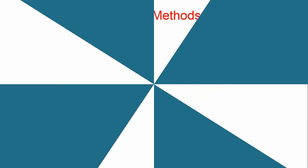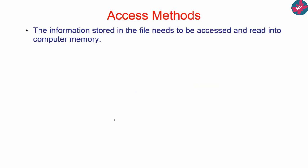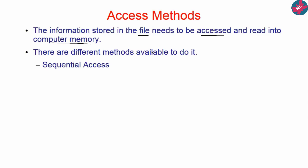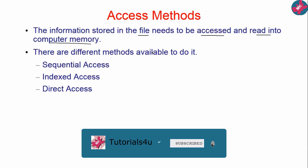The new topic we are going to study is access methods. Access means how we are going to get or retrieve information. We have seen that information is stored in a file, and whatever is stored in the file we need to access and read into computer memory. There are three methods: sequential access, index access, and direct access. We will discuss all three in detail.